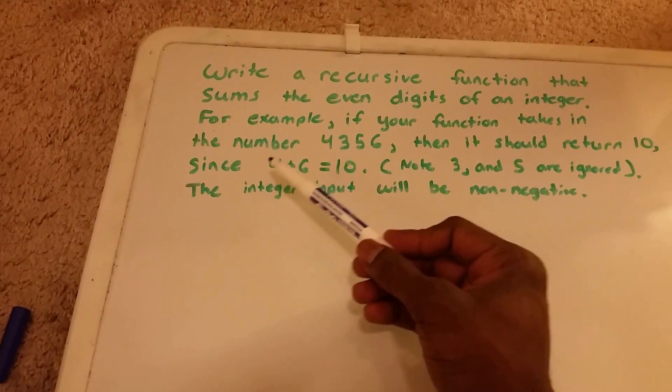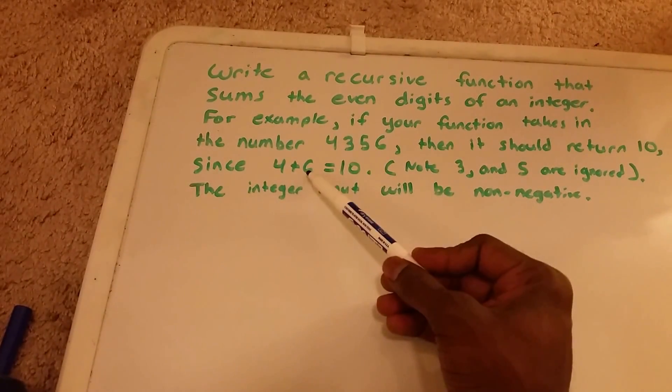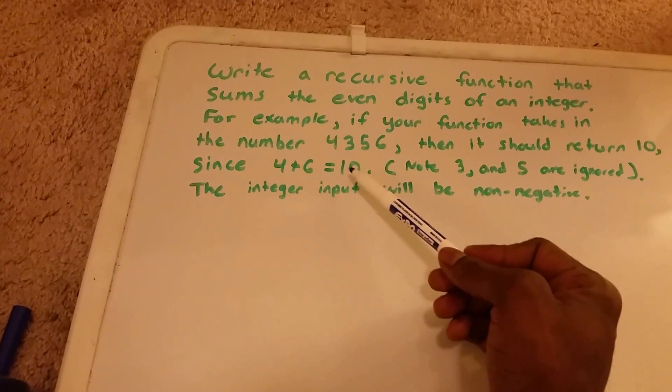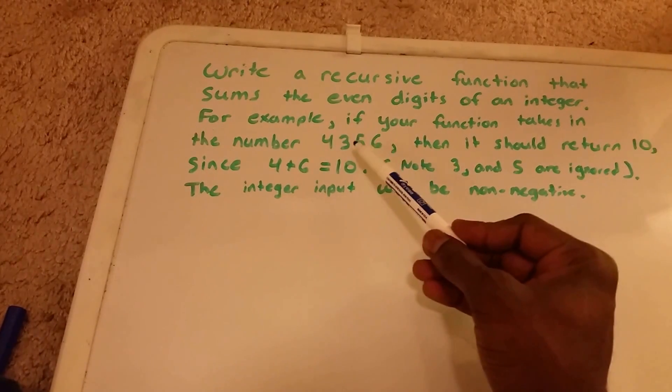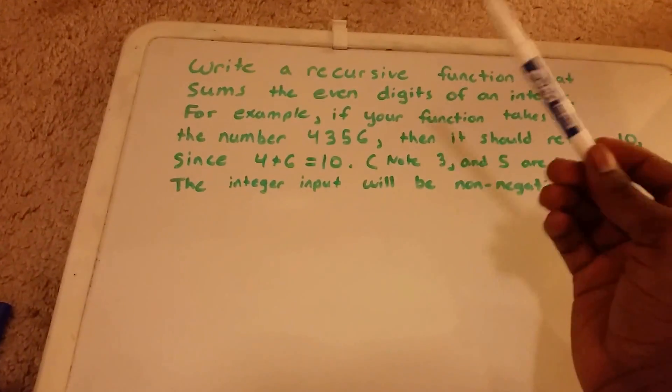The reason why it does this is because 4 is an even number and 6 is an even number, so we're going to add them together, which gives us 10. You'll notice that we did not sum 3 and 5 as well, because they're odd.